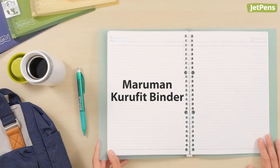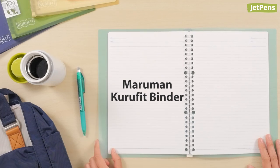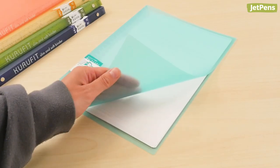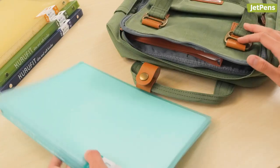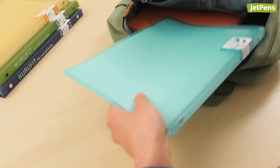The Maruman Kuru Fit Binder stands out because it's so portable. It's lightweight and slim with a flexible cover, making it painless to carry in your backpack.